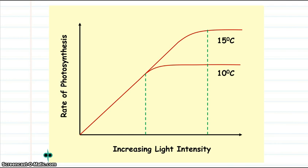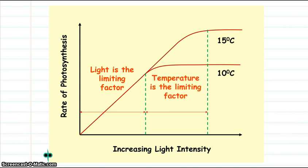In the first stage, light is the limiting factor controlling the rate of photosynthesis. In the second stage, temperature is the limiting factor because that determines the split between the two lines.